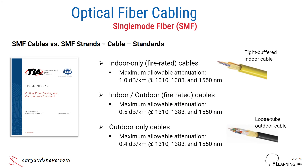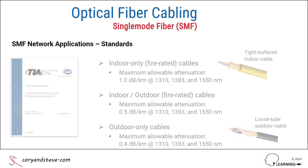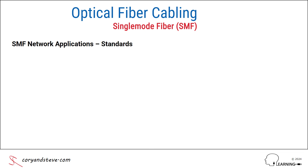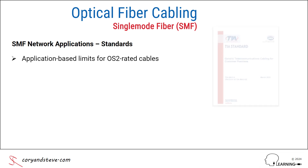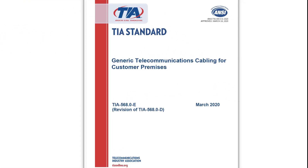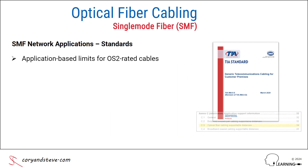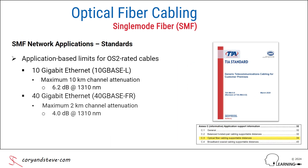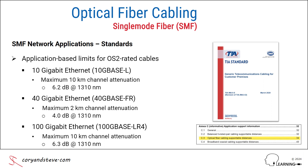The last type of standard to review is for the network applications that operate over the OS2-rated cables. The maximum allowable length of OS2-rated cable between two network devices depends on the application or type of network, so the cabling system designer needs to consider both current and expected future requirements. The TIA-568.0 standard, currently in Edition E, lists the supportable distances and maximum allowable end-to-end channel attenuation values for various types of networks, including 10, 40, and 100 Gigabit Ethernet.